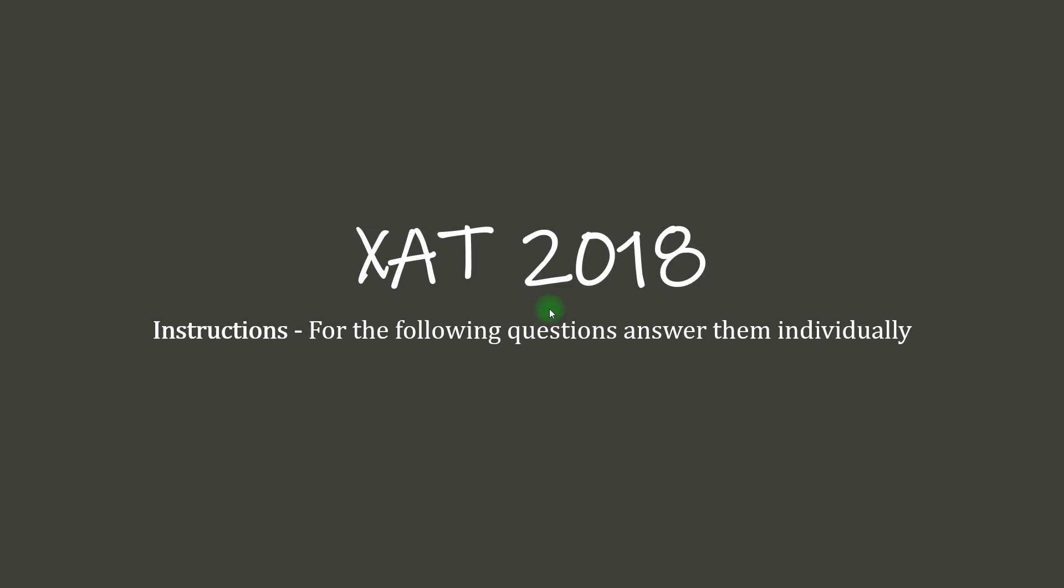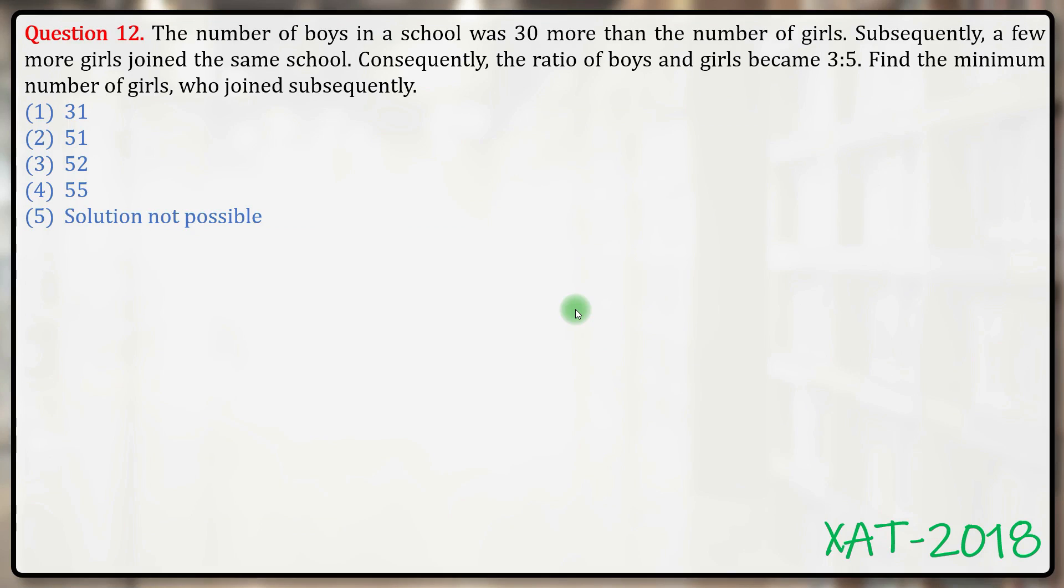Hello everyone, let's get on with this question of XAT 2018. The number of boys in a school was 30 more than the number of girls. Subsequently, a few more girls joined the same school. Consequently, the ratio of boys and girls became 3 is to 5. Find the minimum number of girls who joined subsequently.